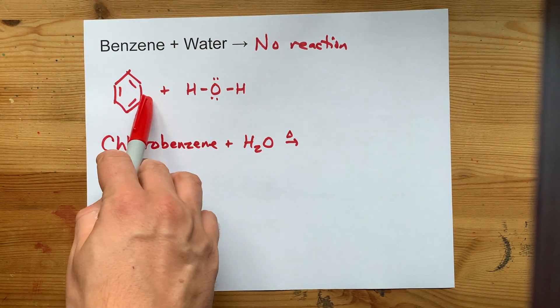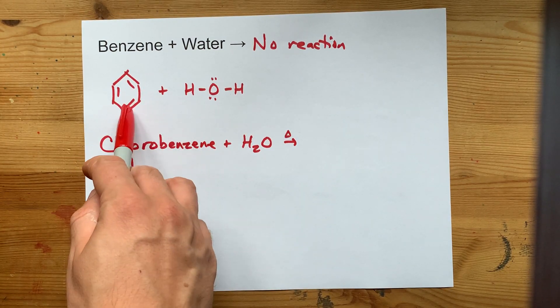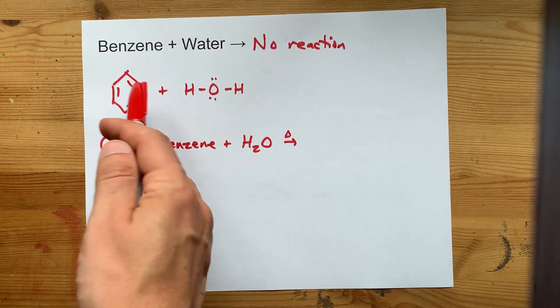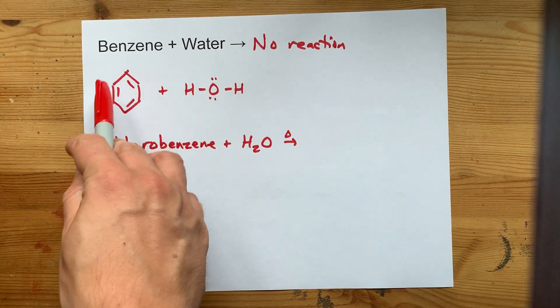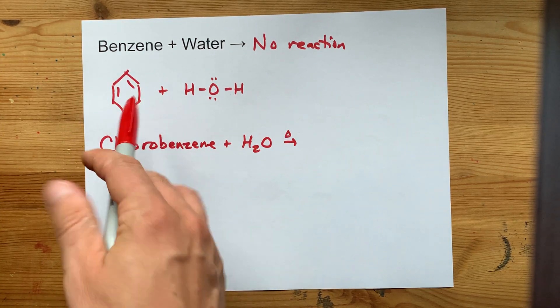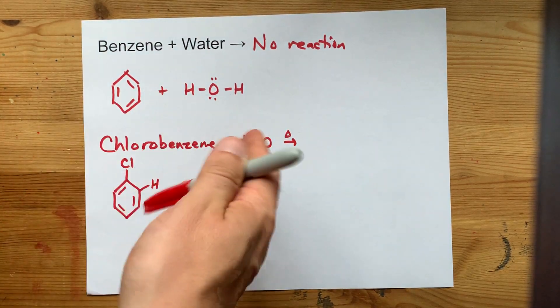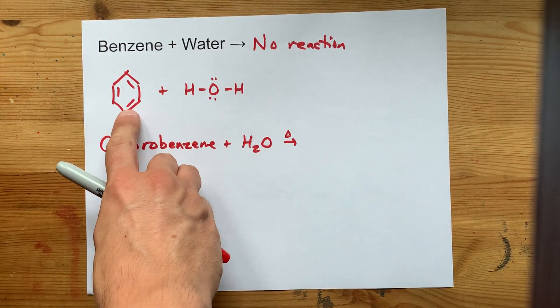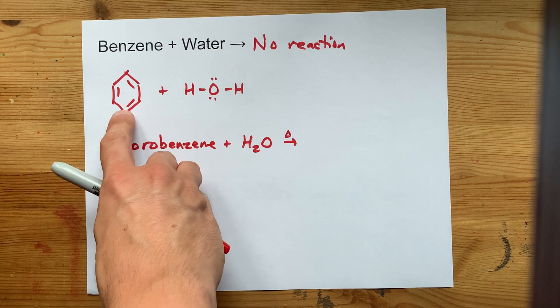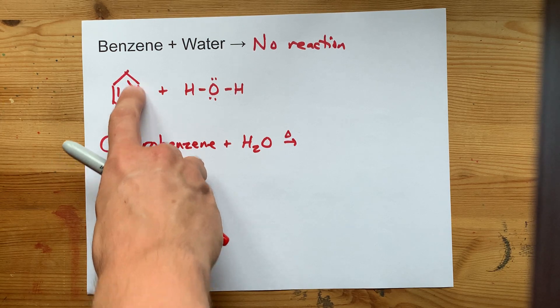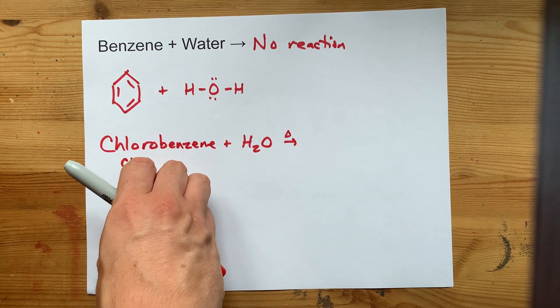The double bonds of benzene are delocalized, meaning that the electrons are—we don't want to say that they're circulating or spinning around the ring, but that's how I picture it. They're tough to pin down. It's not like there's electron density right in between just these two carbons. It's evenly distributed around the ring.